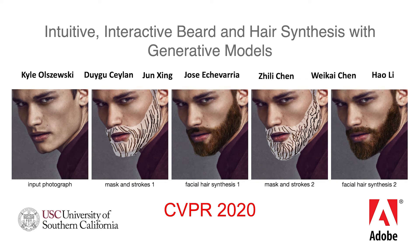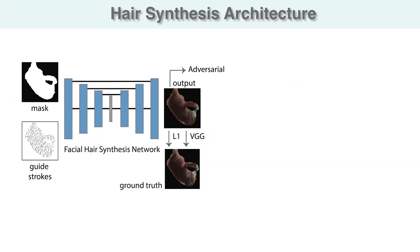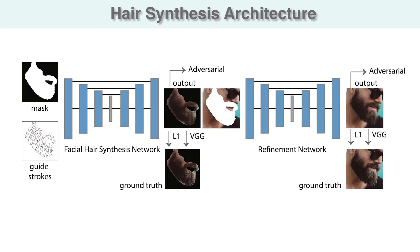My name is Kyle Olszewski and I'll be presenting a novel approach to synthesize and edit beards and hair in real facial images. Our framework consists of a two-stage pipeline. In the first stage, a sparse set of guide strokes defining the local shape and color of the target hairstyle is used to synthesize an initial estimate of this hairstyle. In the second stage, this estimate is refined and composited into the target image.